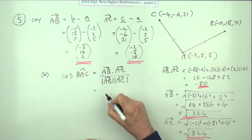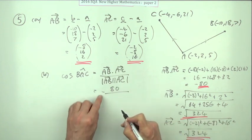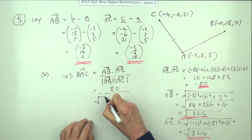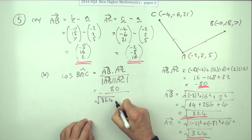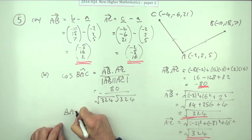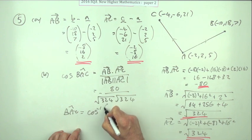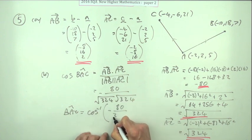So the final bit will be just feed it in. You've got negative 80 over, now you know the root times the root, it's going to cancel out. 324, 324, which means angle BAC will be the inverse cos of 324 because the square roots would multiply back out to that number. Now it's just a case of put that in your calculator and you're done.